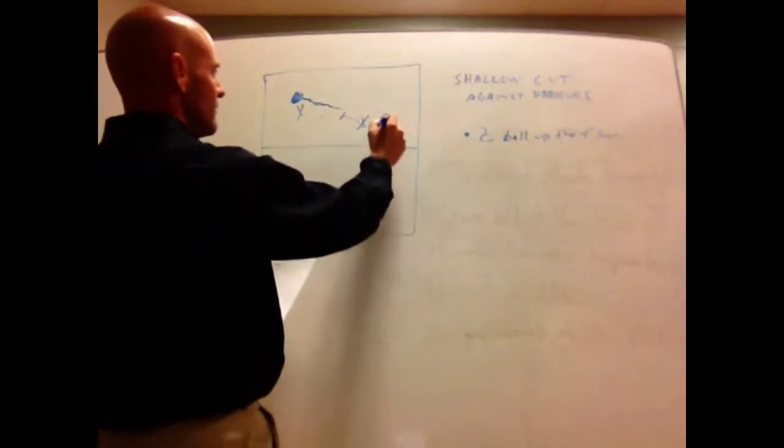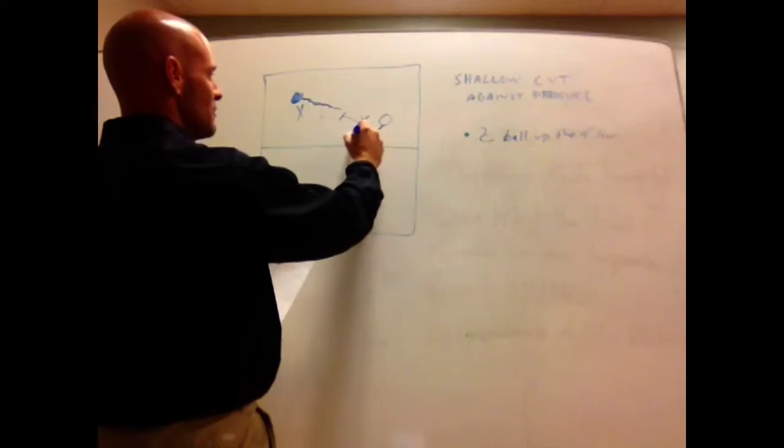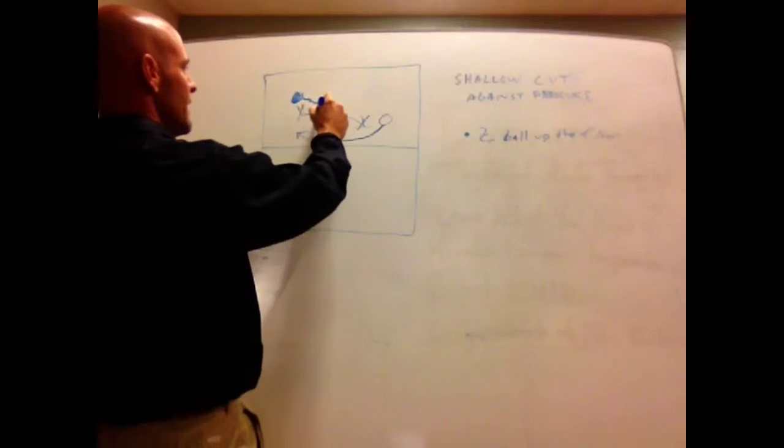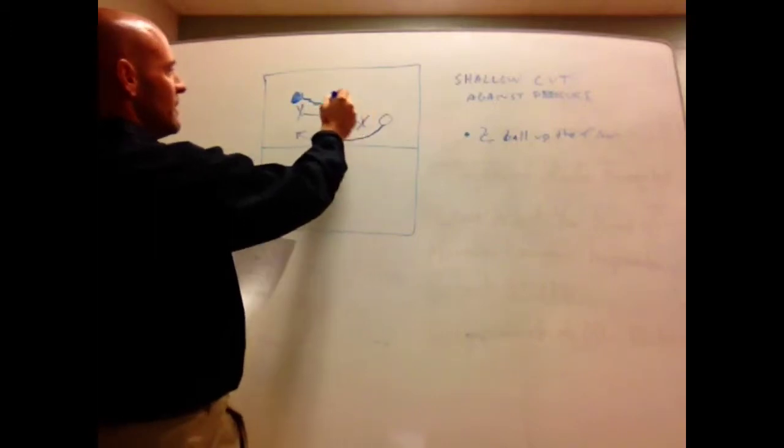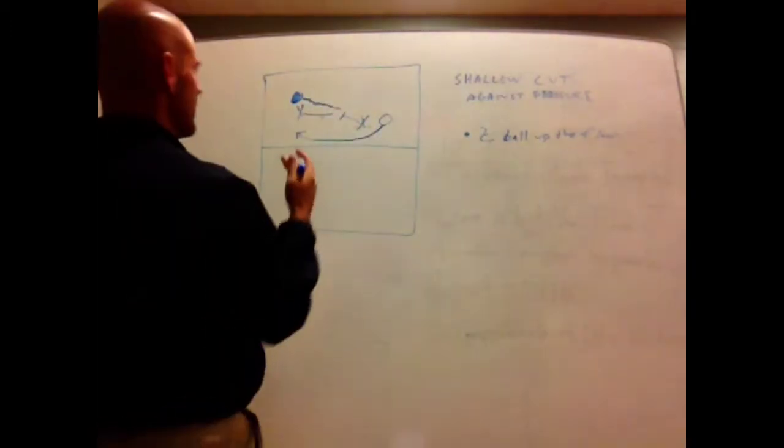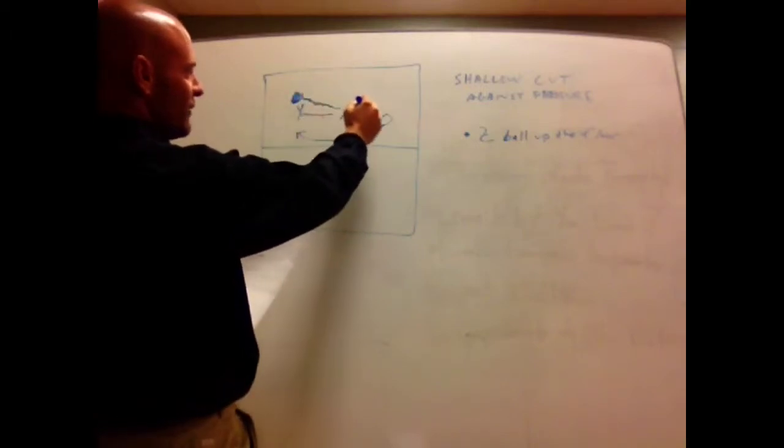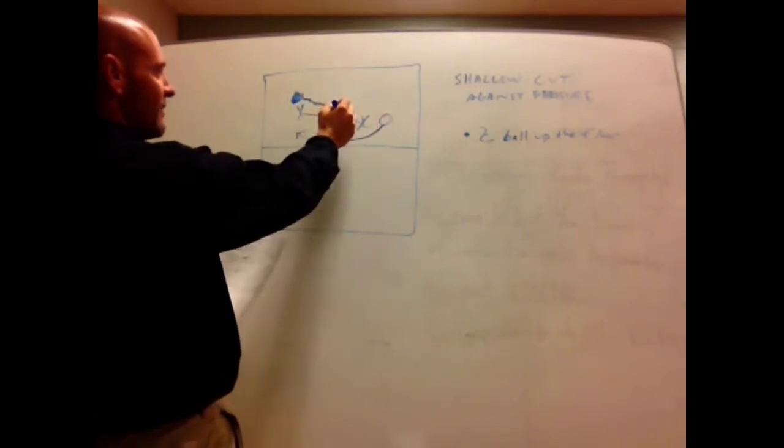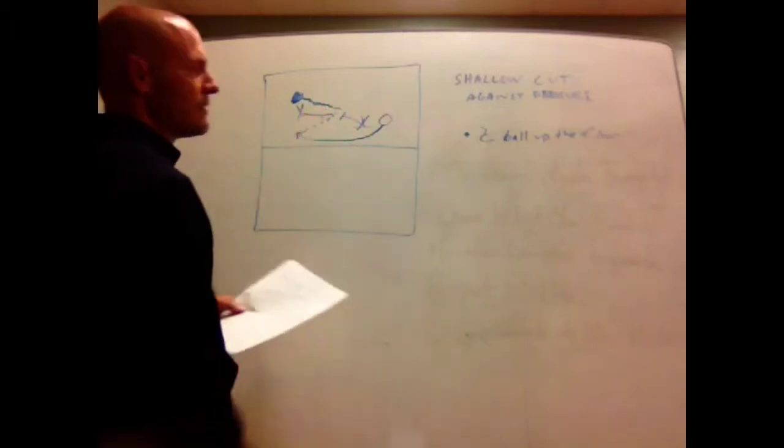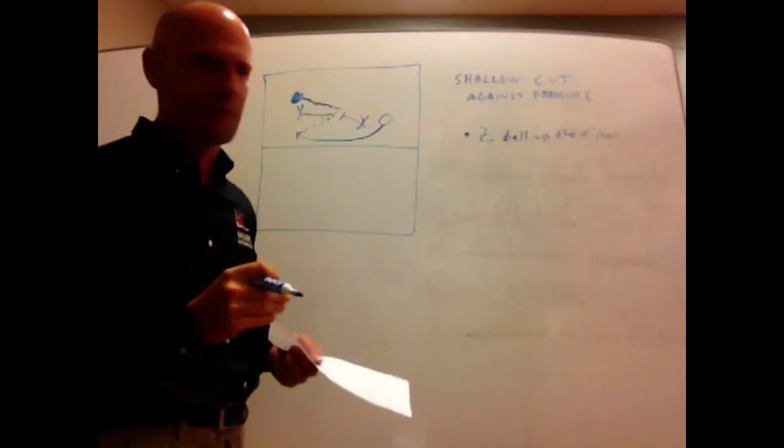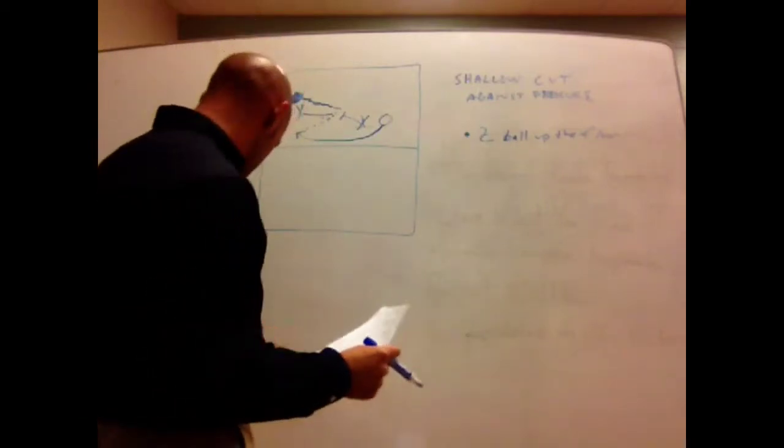We're having the offensive player shallow cut to the opening as these two defenders are going. You can see what's creating a Z pattern. The ball went here, it's getting dribbled this way, and then it's Z-ing back this way. So that's the most common method that we've used, the shallow cut, is to relieve that run and jump pressure.